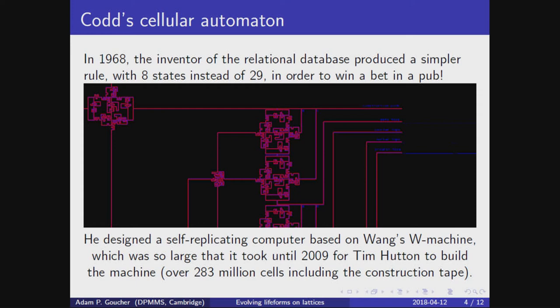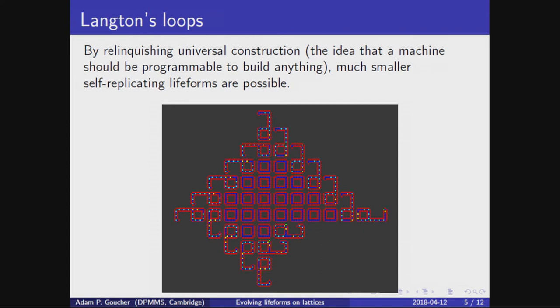Chris Langton came to the rescue. If von Neumann's self-replicator is an organism, then Langton produced something more akin to a virus. Both Langton's loops and viruses contain tiny loops of DNA, sheathed in a symmetrical coat, and this symmetry allows the descriptive complexity to be so low.